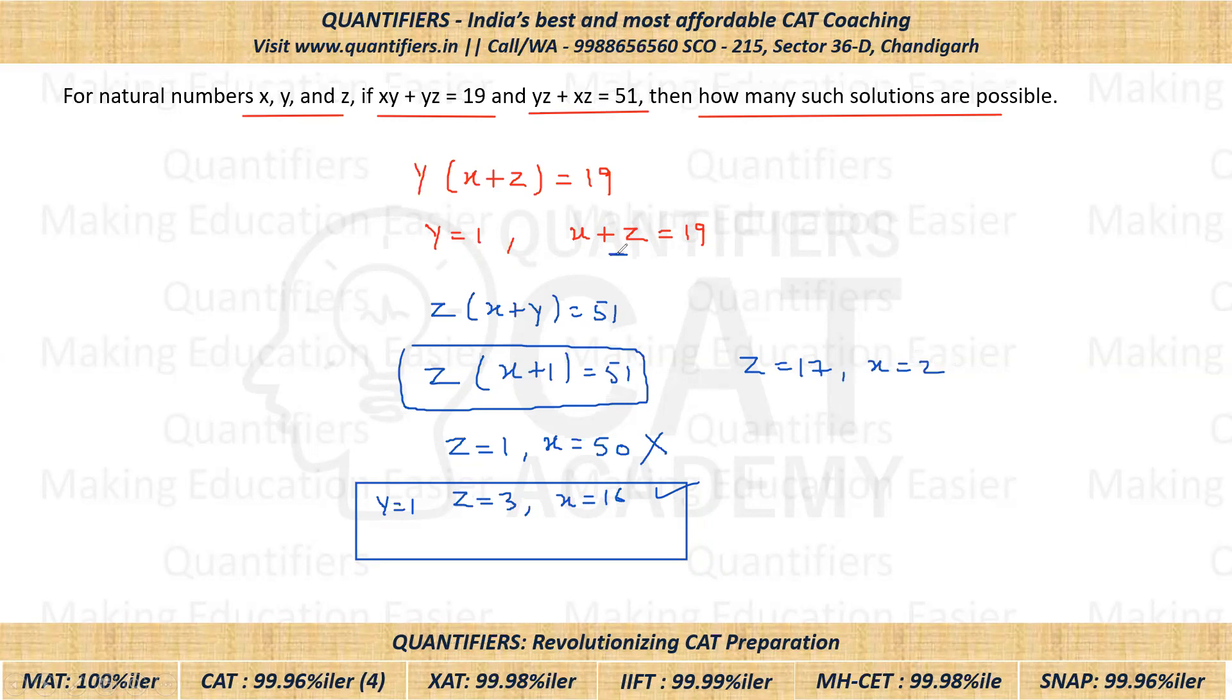And now are we getting x plus z is 19? Yes, we are getting x plus z is 19. That means this is another set of solutions. When z is 17, x is 2, y equals 1, this will also satisfy both given equations.